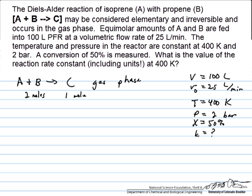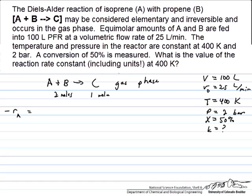First, we can express the reaction rate for consumption of A. We're told this is an elementary irreversible reaction under these conditions, so this equals k times CA times CB, first order in each reactant.